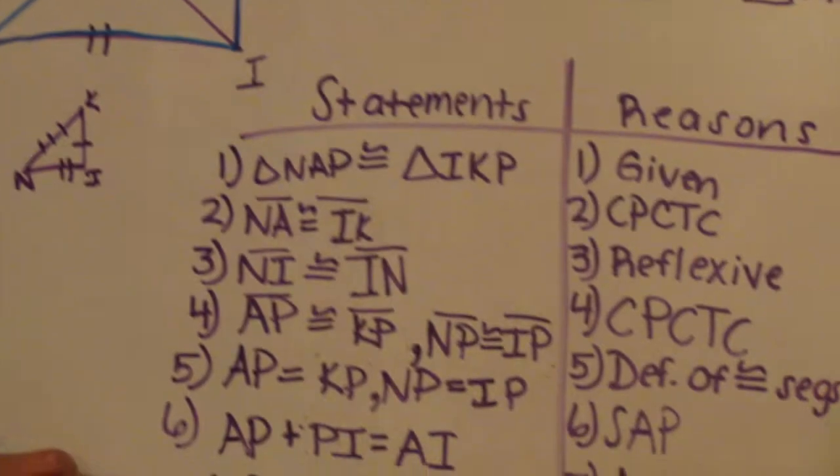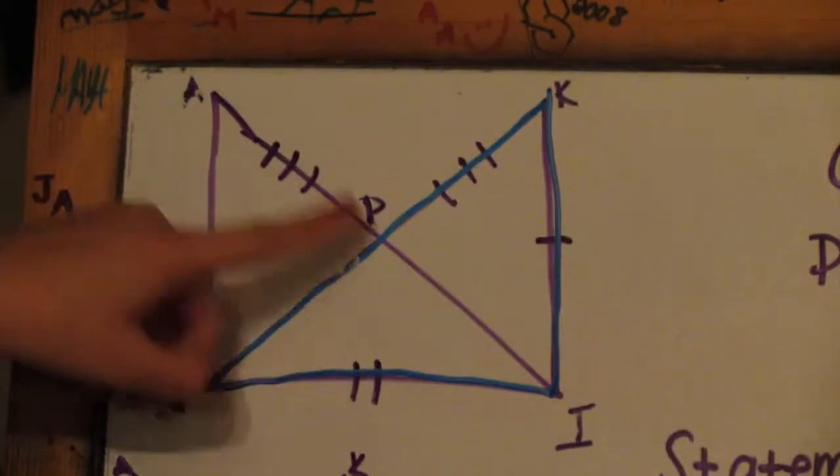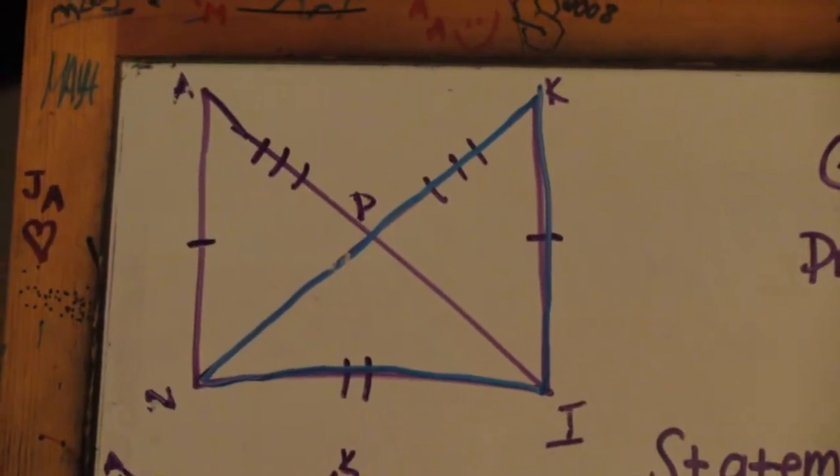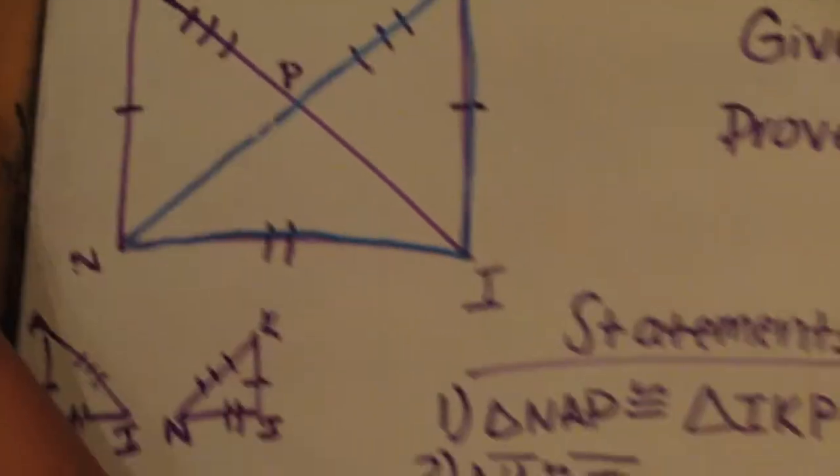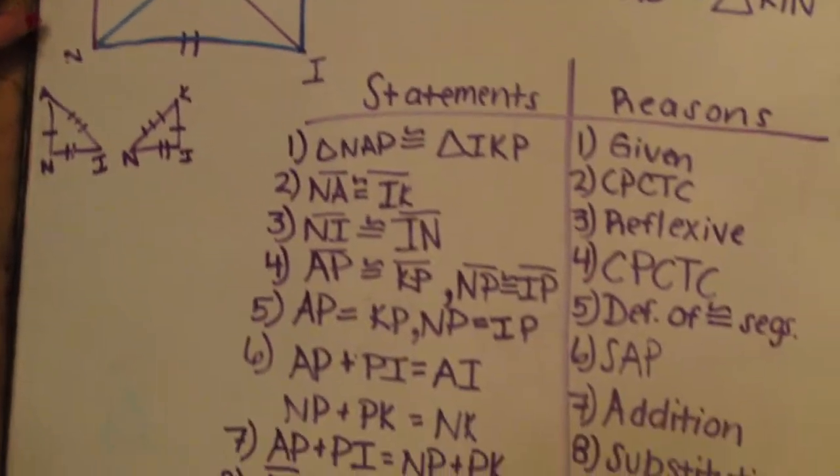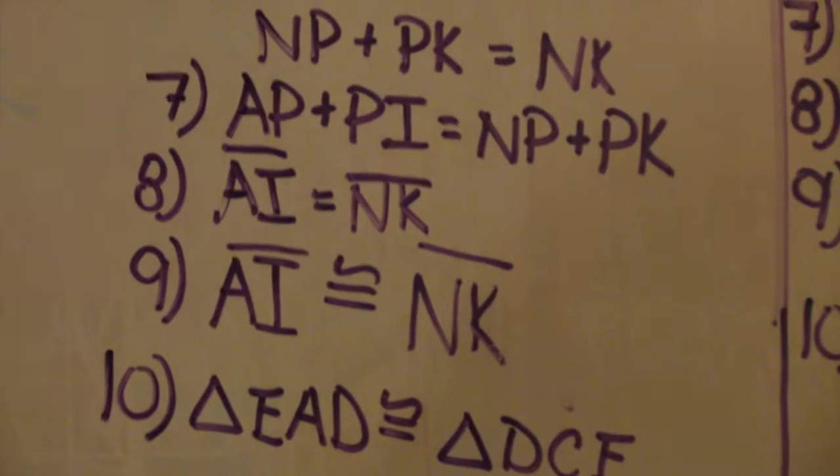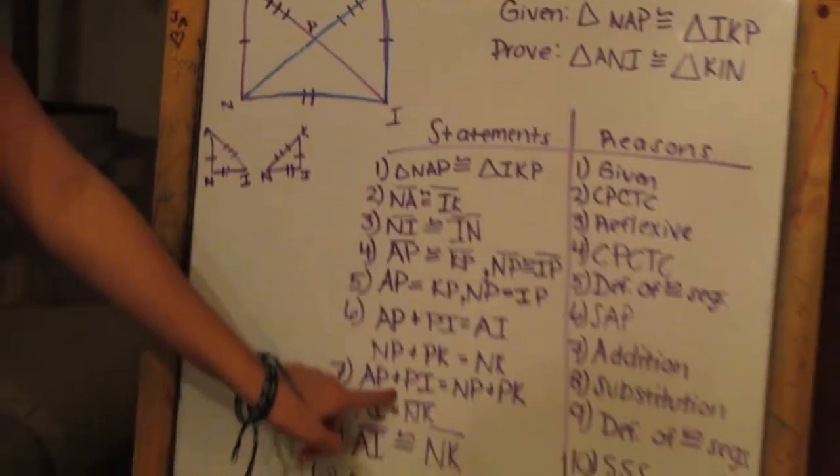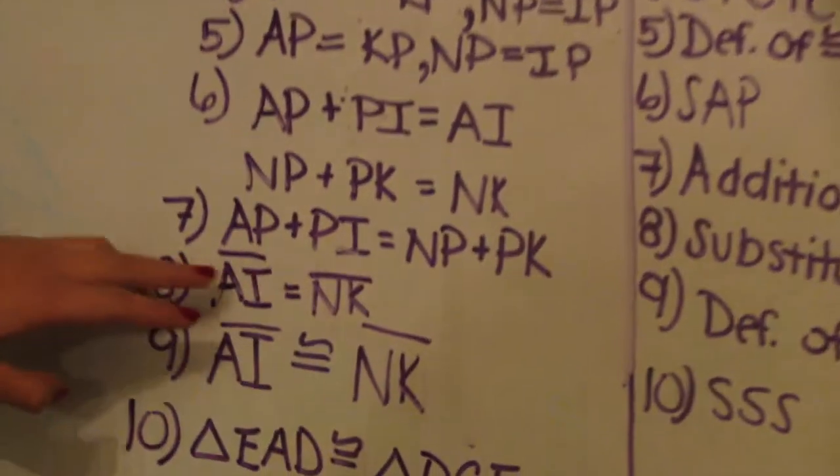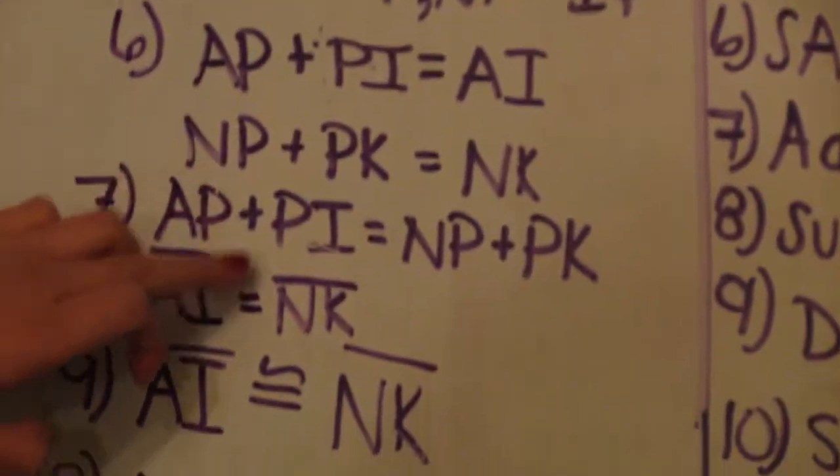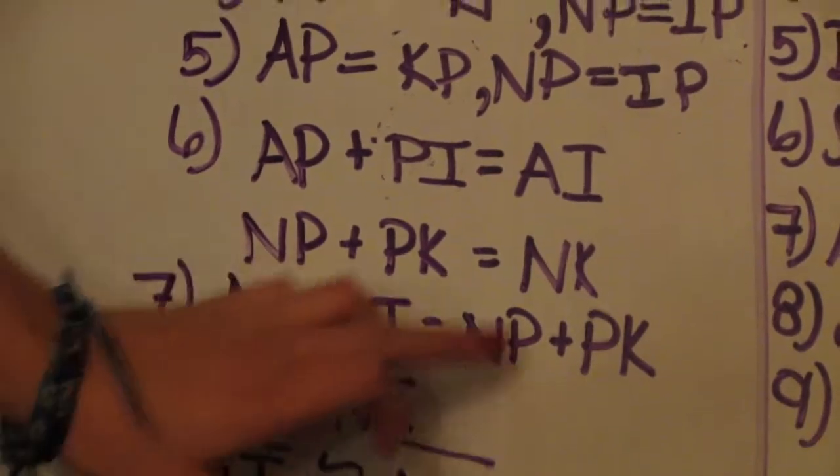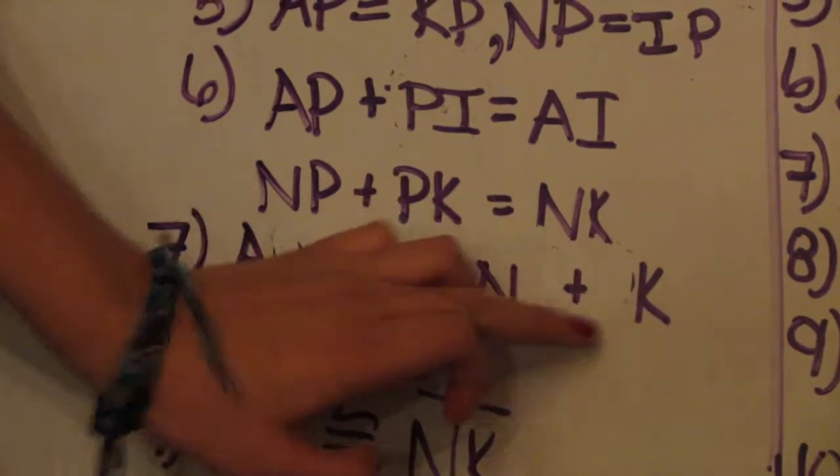And then moving on to the seventh step. So AP plus PI equals NP plus PK. And since it's an addition because there's addition signs on both sides. And then moving on to step 8, AI is equal to NK because of substitution. So what we essentially just did there is we put that together and kind of switched it around. And just eliminated the Ps here and said that it was just AI. And eliminated the Ps here and said that it was NK.